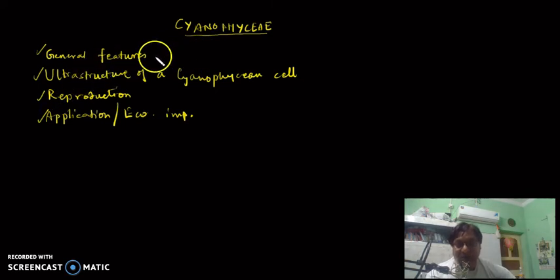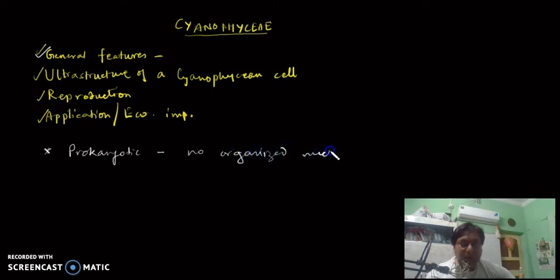Now let us see the general features of this group. Cyanophyceae, they are basically prokaryotic alga. First of all, they are prokaryotic in nature. That means they have no organized nucleus. There is no nuclear membrane and the DNA is naked.